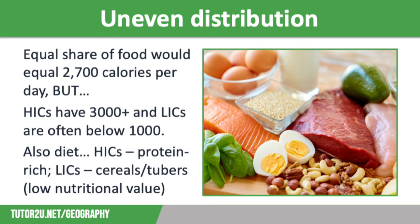As well as calories, we have to consider the types of food available to different people. In HICs, nearly a third of our diets are made up from protein-rich meat, fish, eggs and dairy products, which is then supplemented with lots of starchy food such as potatoes, bread, rice and pasta. This gives us lots of energy and essential fibre, calcium, iron and vitamins. Whereas in many LICs, 75% of the diet is made up of cereals and tubers, which have a low nutritional value.